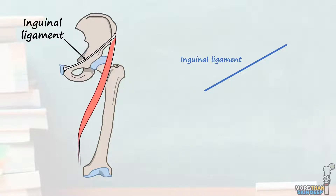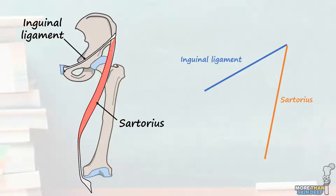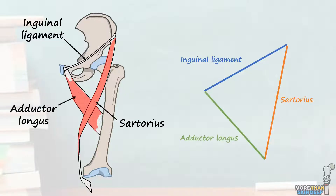The lateral border of the femoral triangle is formed from the medial part of the longest muscle in the body, the strap-like sartorius. This muscle's name comes from an interesting origin — if you know it, why don't you let us know in the comments? The sartorius also originates from the ASIS and travels across and down the leg to insert into the medial upper tibia. The medial border of the femoral triangle is formed at the medial border of the adductor longus muscle, which runs from the anterior pubis to about midway down the posterior femur.